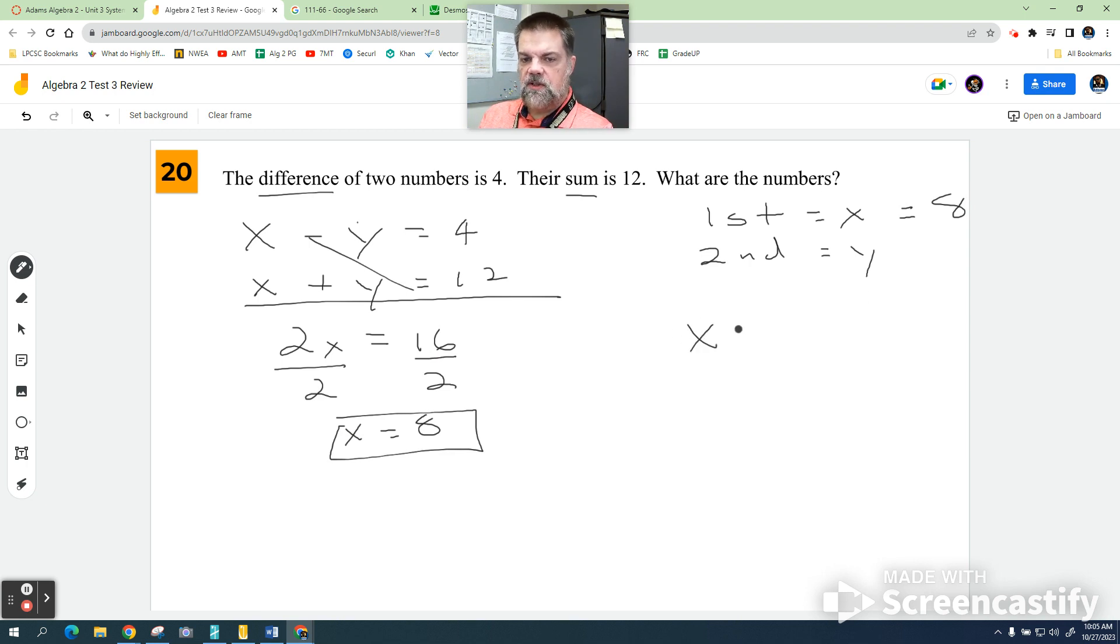So now to find that second number, I'm going to take the first equation which is x minus y equals 4, and wherever there's an x I'm going to put 8. I'm going to subtract 8 from both sides, I get negative y is equal to negative 4. Divide both sides by negative 1 and I get y equals positive 4.